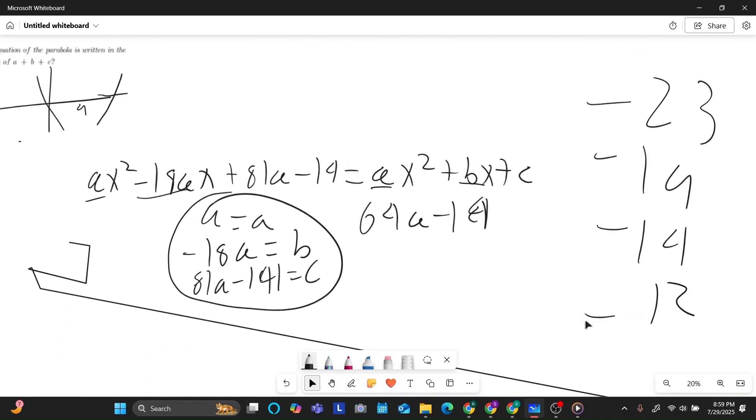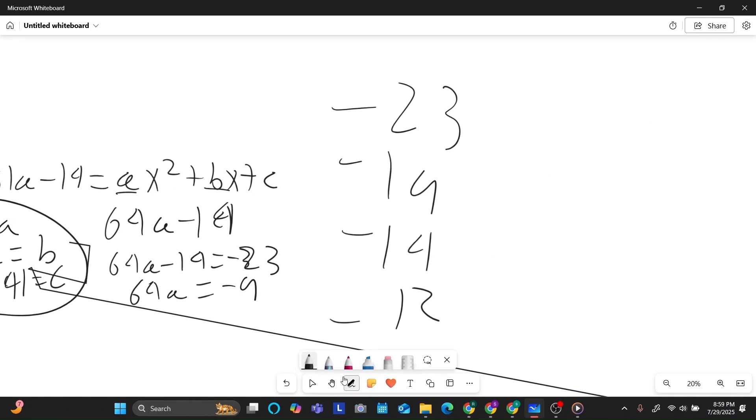So plugging those in, starting off with negative 23. 64a minus 14 equals negative 23. I'm going to add 14. 64a equals negative 9. A would be negative. That wouldn't work out. And then for answer choice b. 64a minus 14 equals negative 19. Again, that would give me negative 5. And so that would not work as well. C. 64a minus 14 equals negative 14. If I add 14 to both sides, I get 64a equals 0. That's not negative, but that's not positive either. That would just have no parabola if a is 0. So c would be out as well.